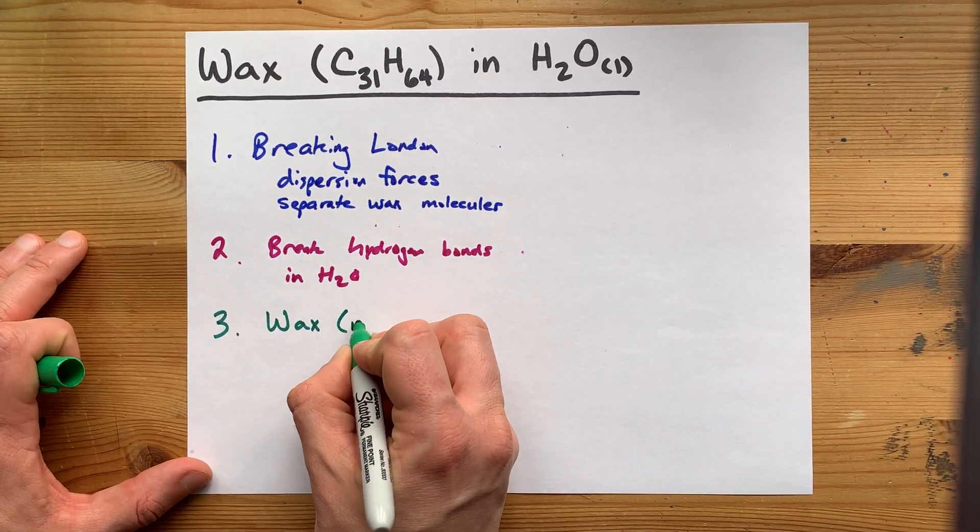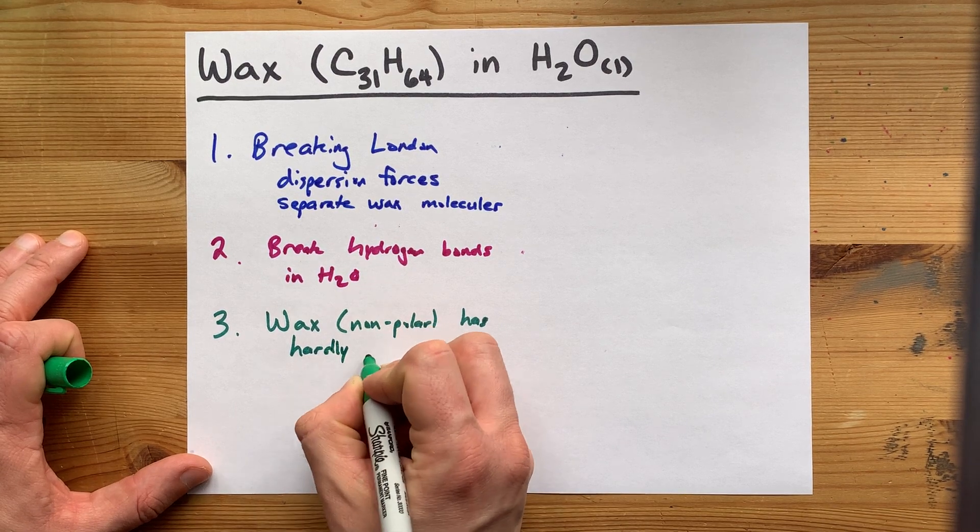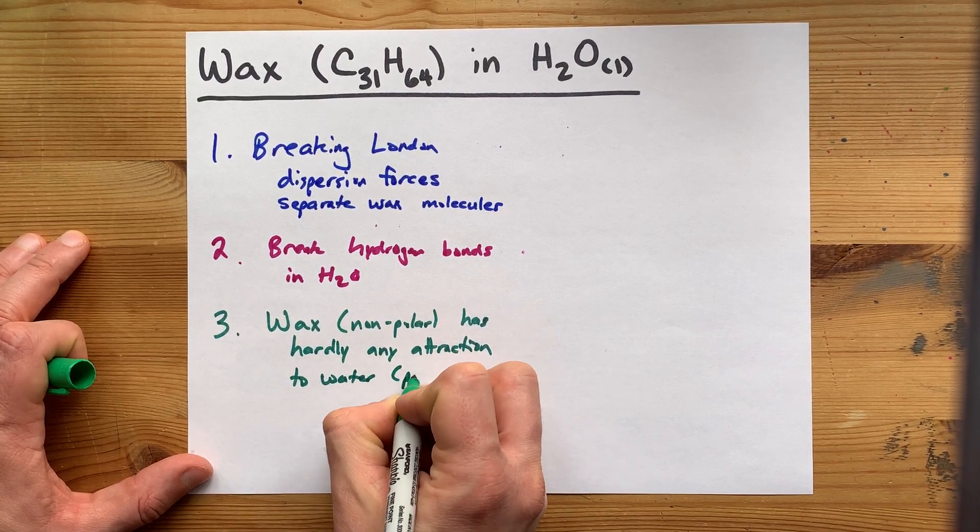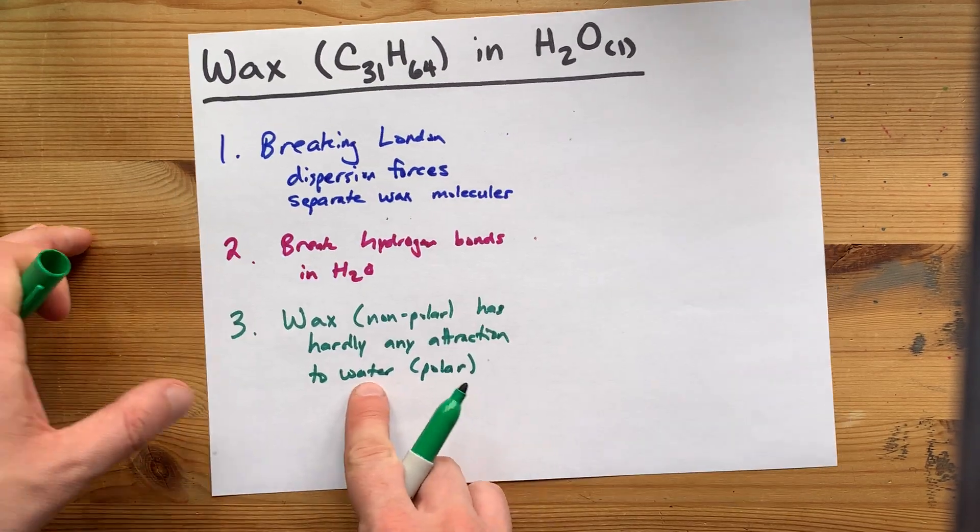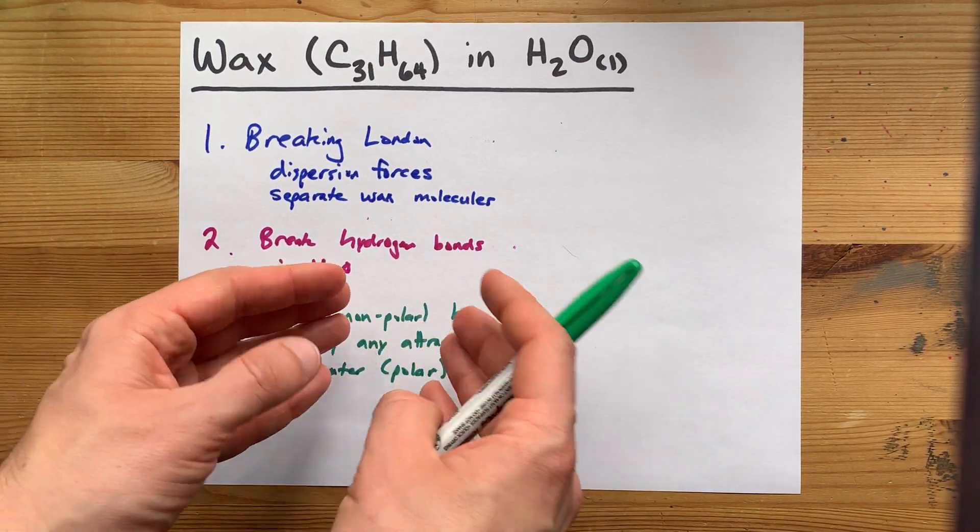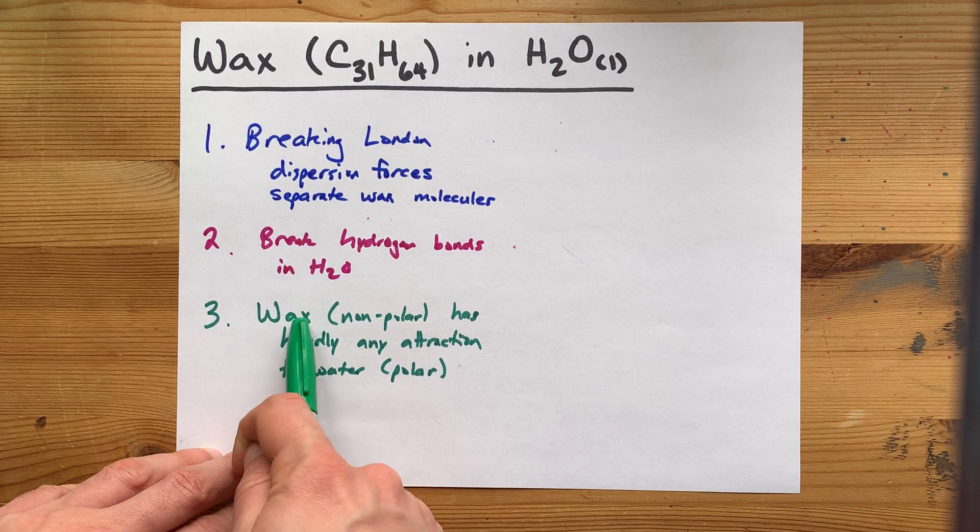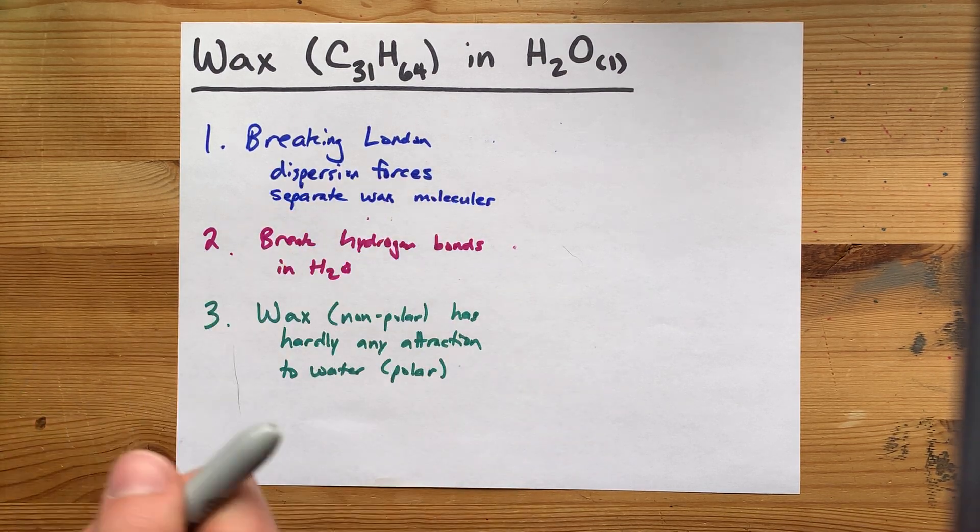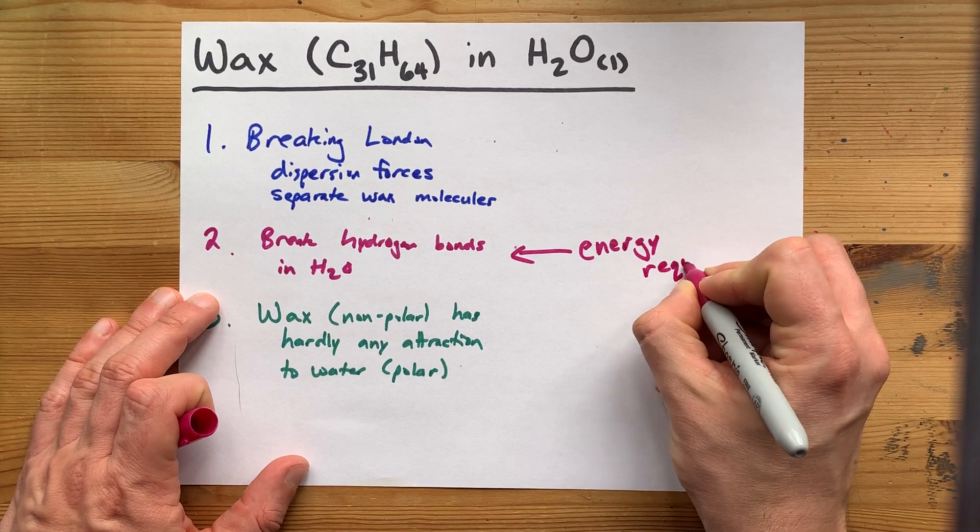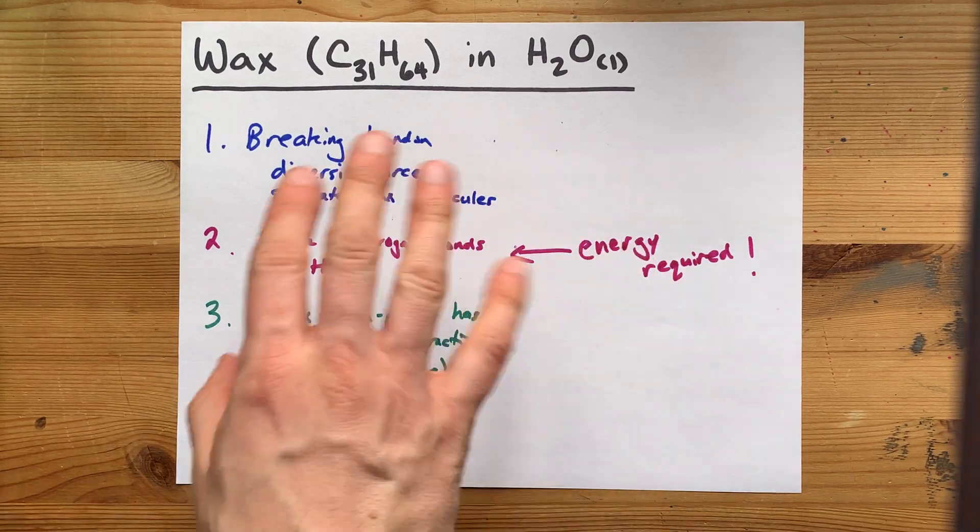And then, we try to mix the wax molecules with the water. But, unfortunately, wax, which is non-polar, has hardly any attraction to the polar water molecules. In fact, water molecules would rather stick together than allow a wax molecule to get in there because the hydrogen bonds that they make with each other are so strong, they don't want to get broken for some lackluster attraction that they're feeling with the wax molecule. The most important process here is probably this: there's more energy required to break the hydrogen bonds of water than you're getting as a payoff to mix the solute and solvent. That's why wax doesn't dissolve in water.